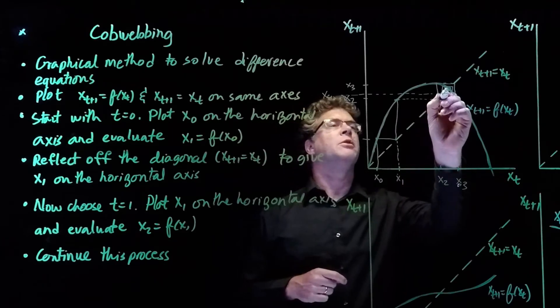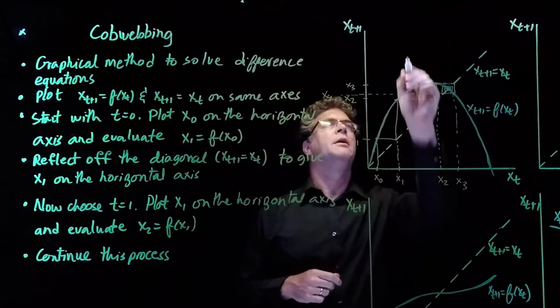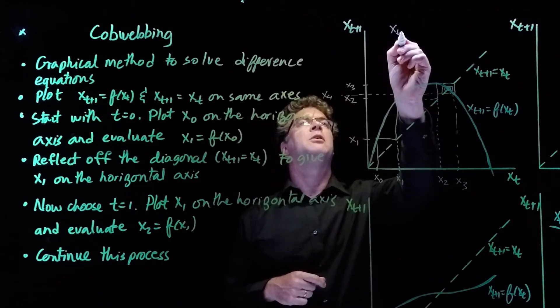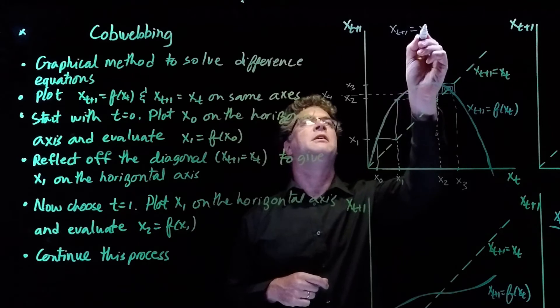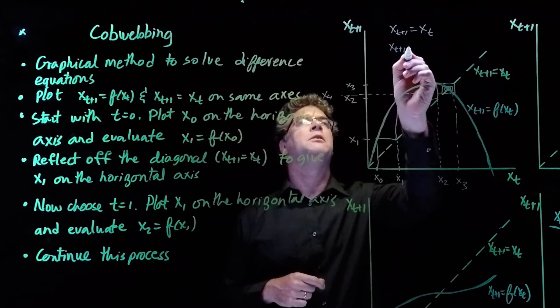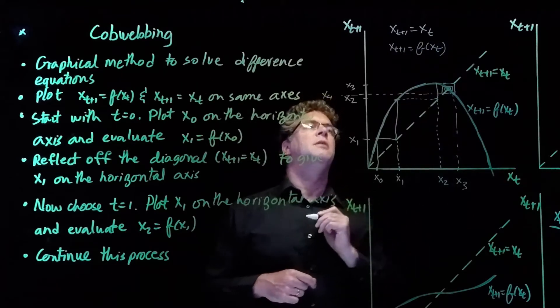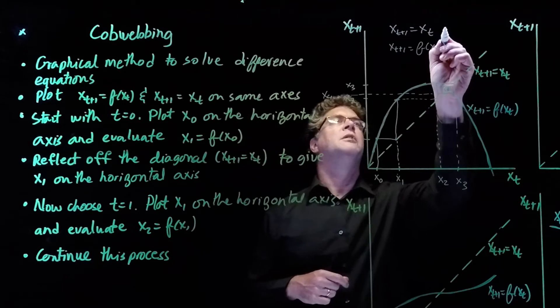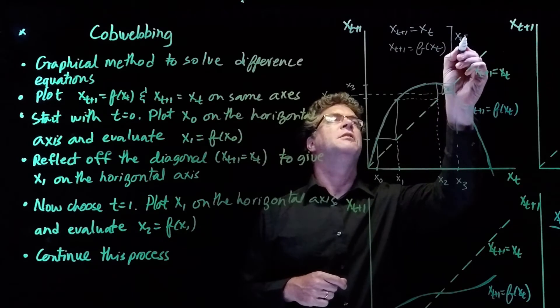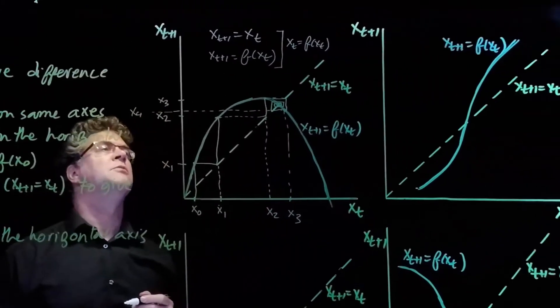The location where these two curves meet is the equilibrium. So at the equilibrium point, we have x_t+1 = x_t, and x_t+1 = f(x_t). And if we put these together, then we see that x_t = f(x_t), which is the definition for an equilibrium.